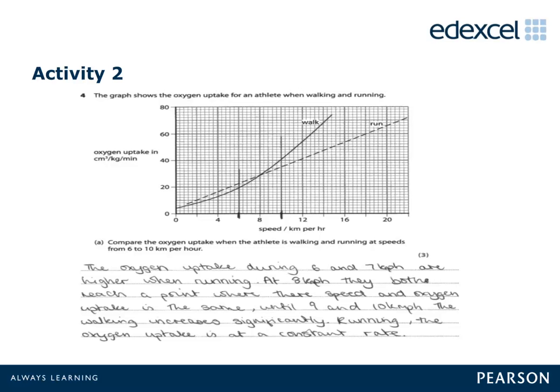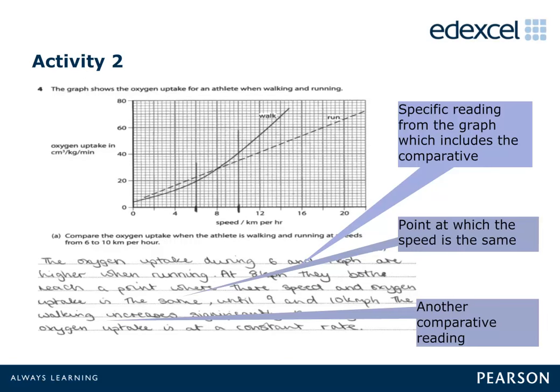The next three slides are about question 4a, which is a 3-mark question on the higher tier paper. You may want to pause and look at the question and the associated mark scheme before embarking on this activity. Marks were awarded here for a comparison using the data in the graph. This candidate scored all available marks — 3 marks — as they managed to give a good comparison of the data and picked out the relevant areas of the graph to discuss.